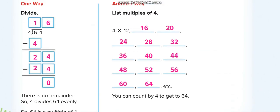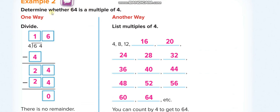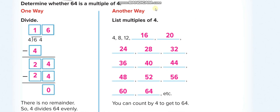On the next page, they want you to find out if 64 is a multiple of 4. You list the multiples of 4: 4, 8, 12, 16, 20, 24, 28, 32, 36, 40, 44, 48, 52, 56, 60, and 64. Yes, 64 is a multiple of 4. If they ask for the factor pairs of 4, that's just 1 times 4 and 2 times 2. You write the multiples of 4 until you reach 64.